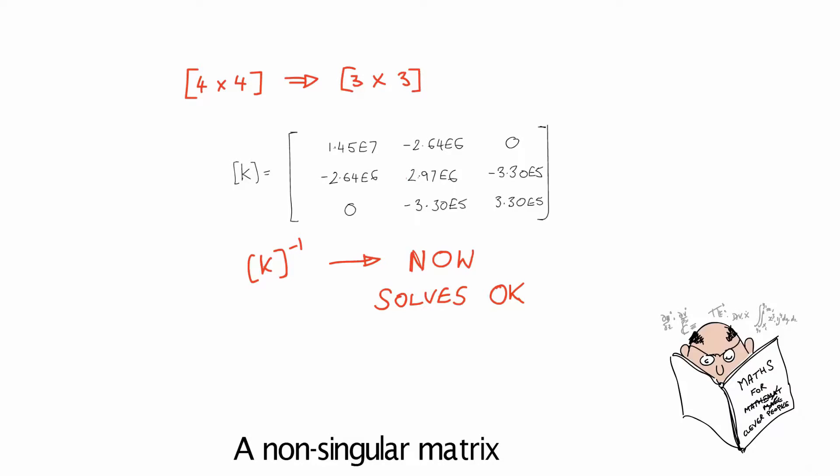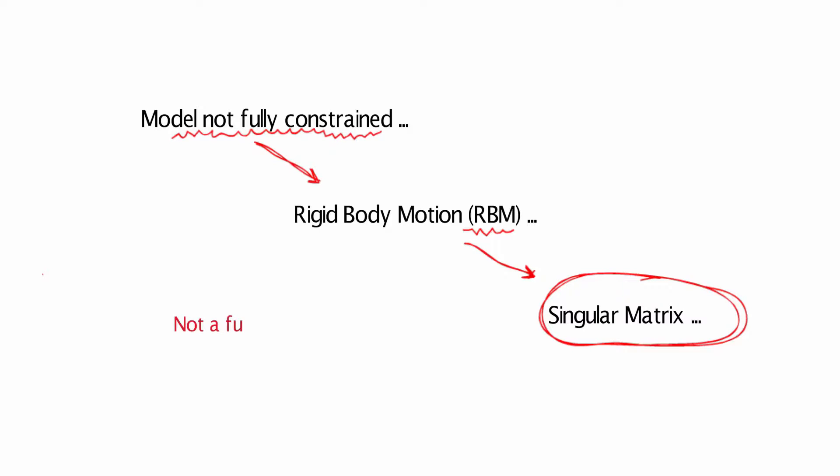It is now a non-singular matrix. The basic issue that we always face is that if the model is not fully constrained we get rigid body motion, and then we get a singular matrix. That's something we've always got to guard against in a model.